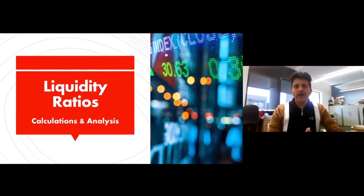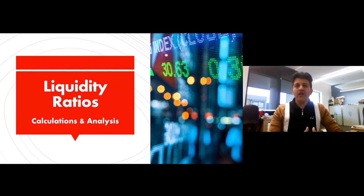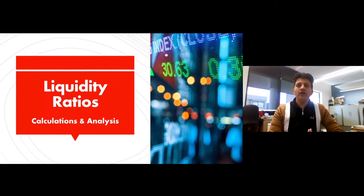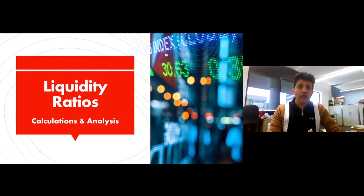Liquidity ratios are an important tool to analyze the financial performance of a business in the area of liquidity. Liquidity means an organization's ability to pay off its obligations, debts, overdrafts, or suppliers' money when they fall due. So if they have to pay £50,000 in a month's time, do they have £50,000 to pay off or not? If they are unable to pay off their obligations, then they could be in trouble. Their lenders could go to court to get them bankrupt, and then the business assets would be sold to pay off its liabilities. And it does happen quite often with businesses who are not able to pay off their loans.